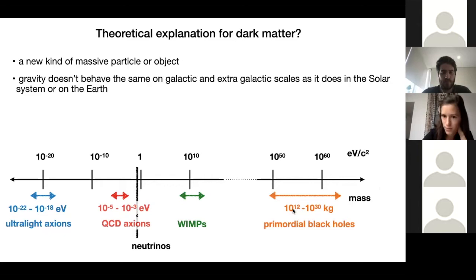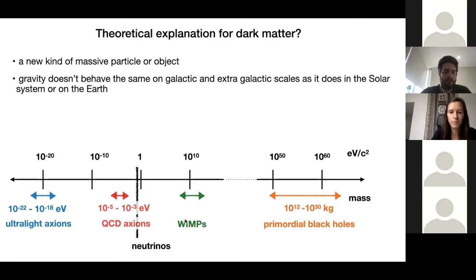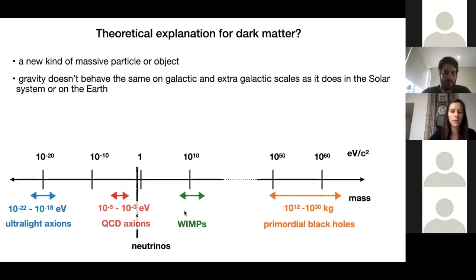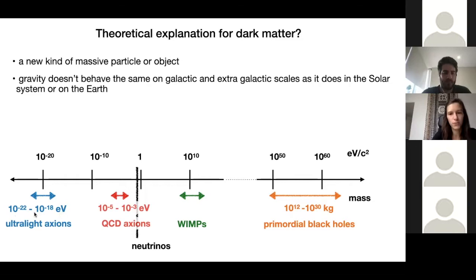On the really high end, we have the option that dark matter is made up of primordial black holes, around solar mass and many orders of magnitude smaller. One of the most popular and established models is that dark matter is made up of WIMPs — weakly interactive massive particles. But because we haven't found WIMPs despite looking for them for a few decades, people have started to look at alternatives. One of the main alternatives becoming interesting today is that dark matter is made up of axion particles. There are two distinct models: QCD axions are around 10⁻⁵ electron volts, and ultralight axions, which is where I mainly work, are in the range of 10⁻²² to 10⁻¹⁸ electron volts.